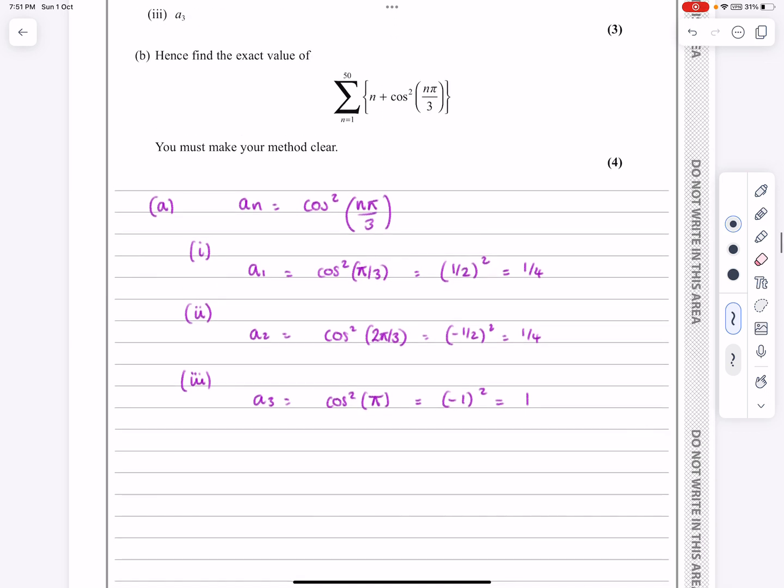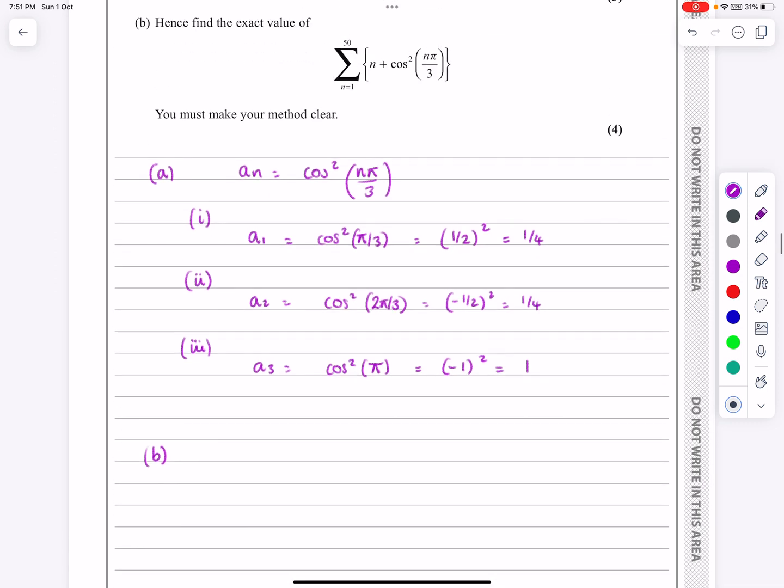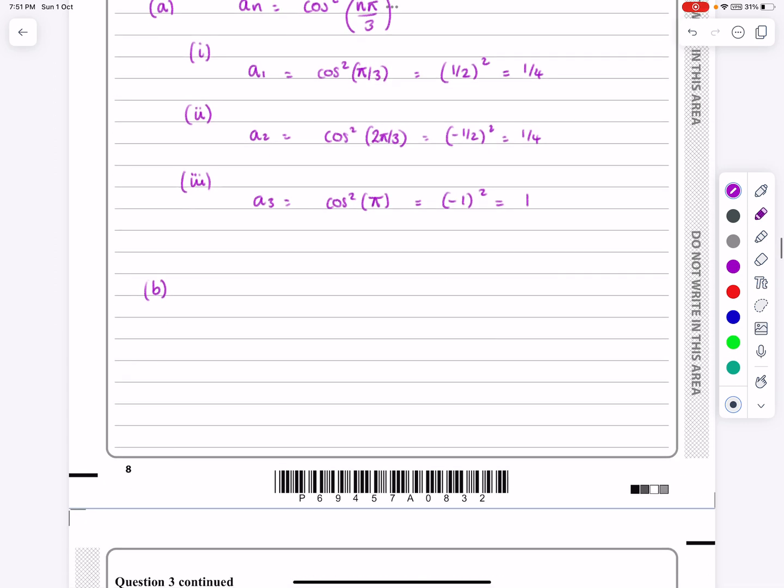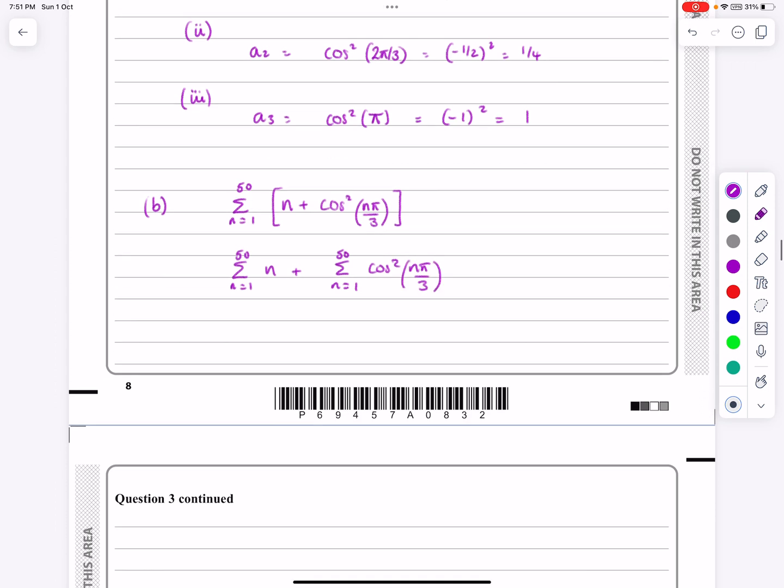Part B then says, hence find the exact value of this sum. So let's write this down, there's quite a bit of work to do within this one. So the sum is the sum of n equals 1 to 50 of n plus cos squared n pi over 3. And let's just do them both separately, and then we'll worry about what they are.